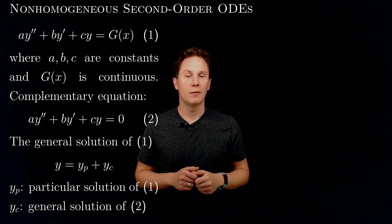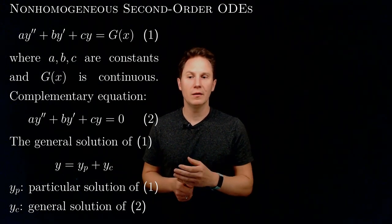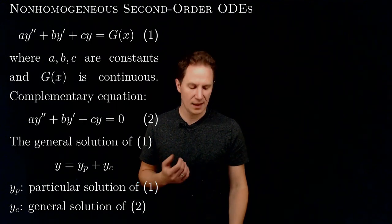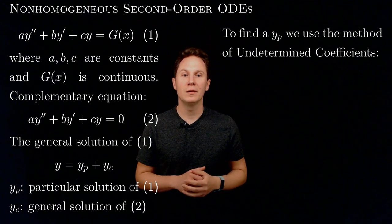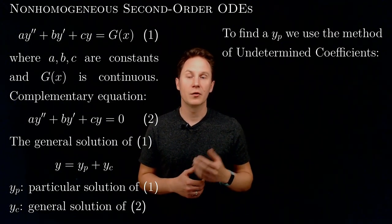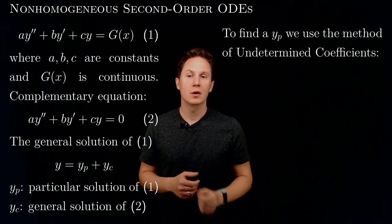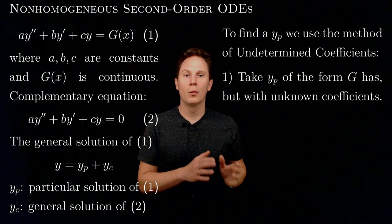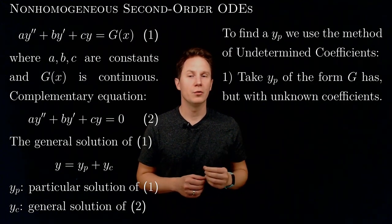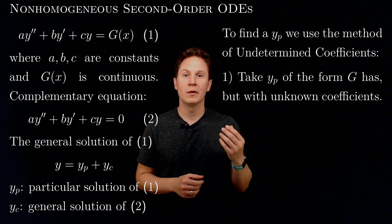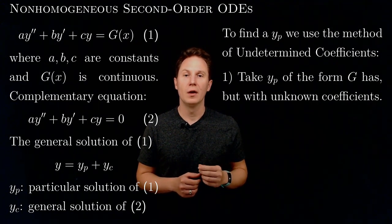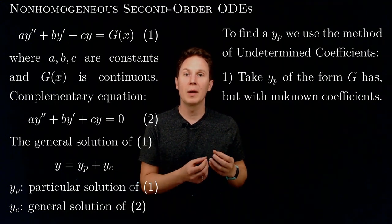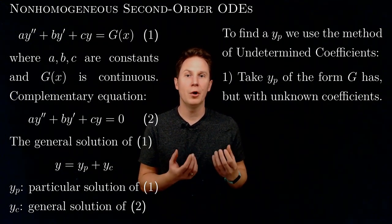The only task that remains is to find a particular solution of the non-homogeneous equation, and for that we have a method called the method of undetermined coefficients. It consists of two steps. First, we look at the right-hand side g of x, and we take y sub p as a trial solution in the same or similar form that g has, but we replace the coefficients with unknown undetermined coefficients.